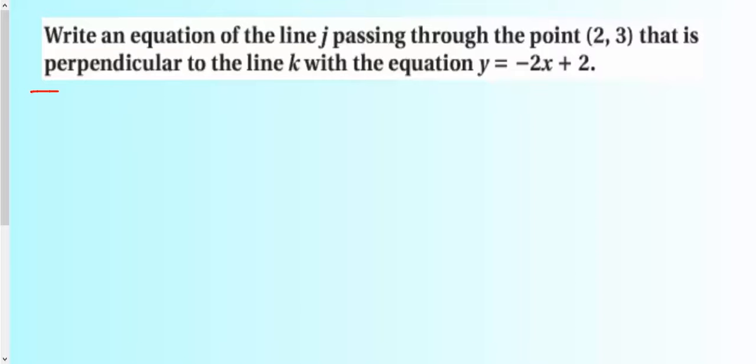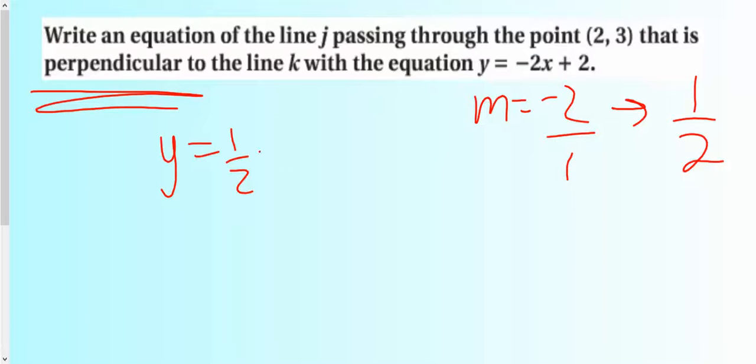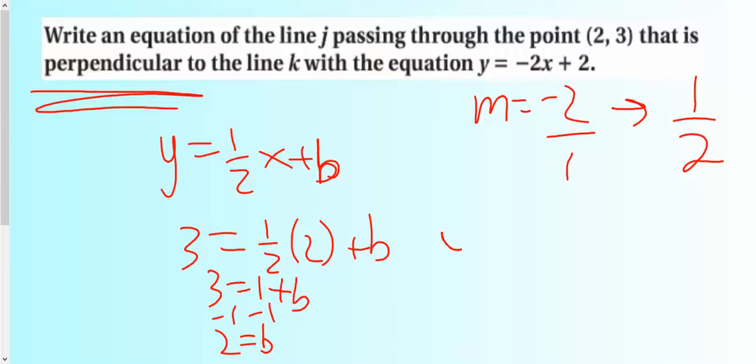And then here we have perpendicular. Same type of problem. Here, m equals negative 2 in this line. It's basically the same exact problem except it's perpendicular. So my new slope will be, I'm going to use the opposite reciprocal technique that we learned in the previous lesson. That's going to be 1 over 2. Then I'm going to take my point again, plug it in, and that will allow me to figure out what b is. 3 equals 1 half times 2 plus b. Half of 2 is just 1. I figure out that b is equal to 2. So y equals 1 half x plus 2.